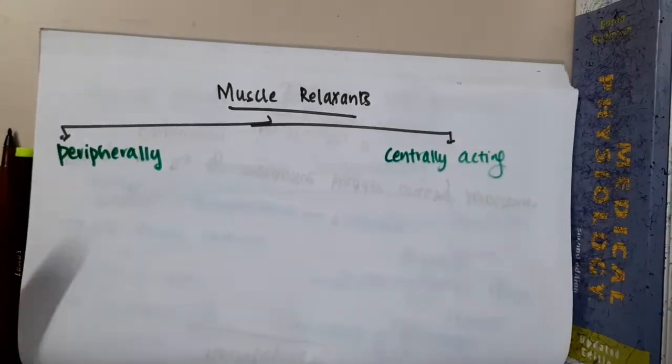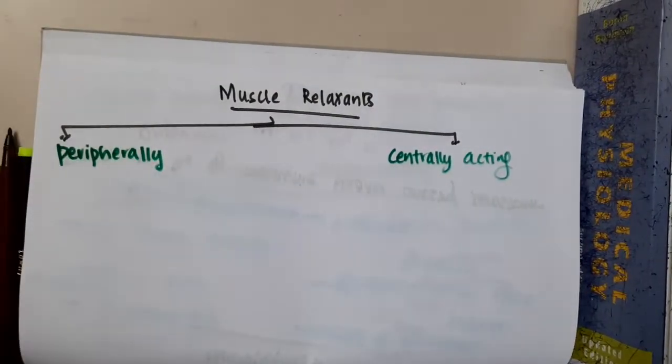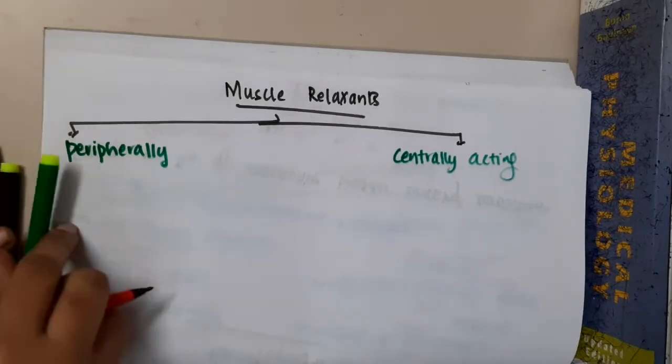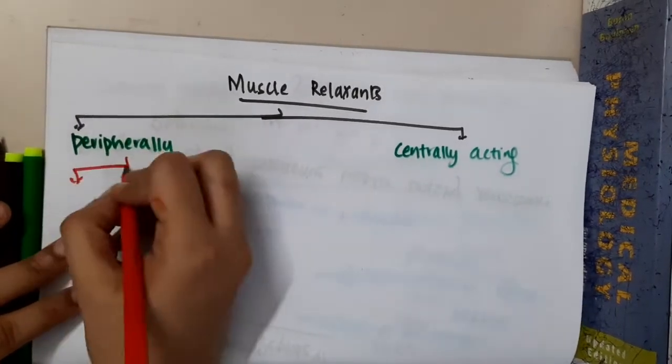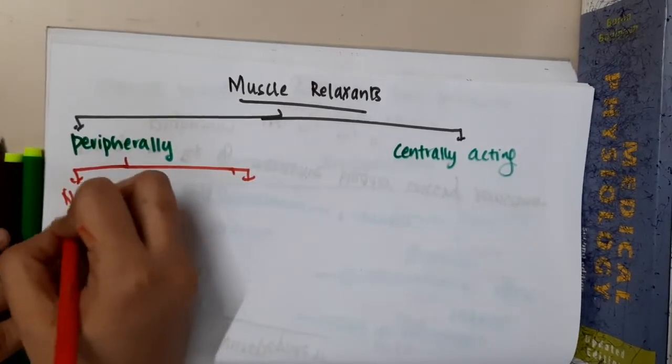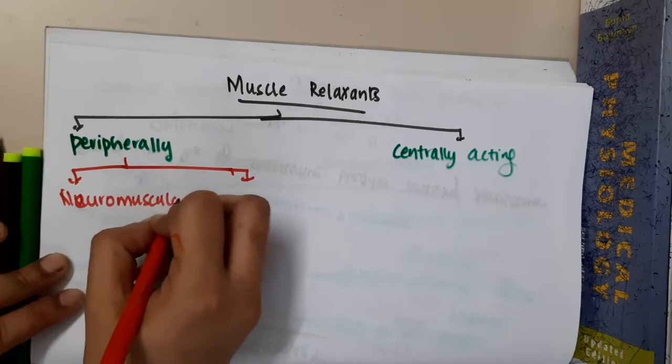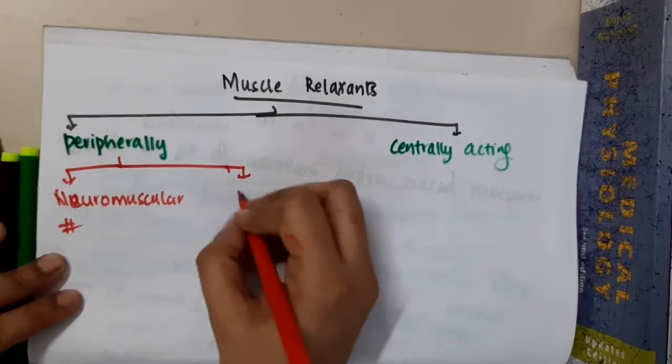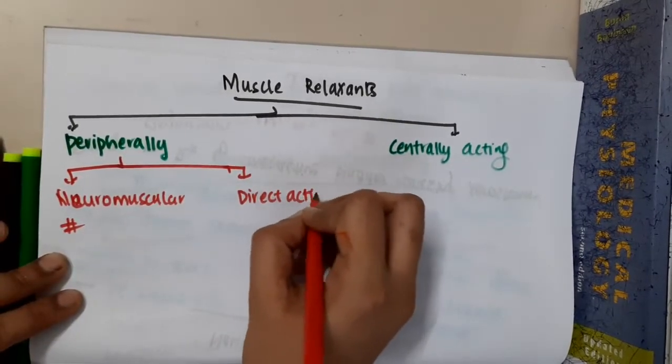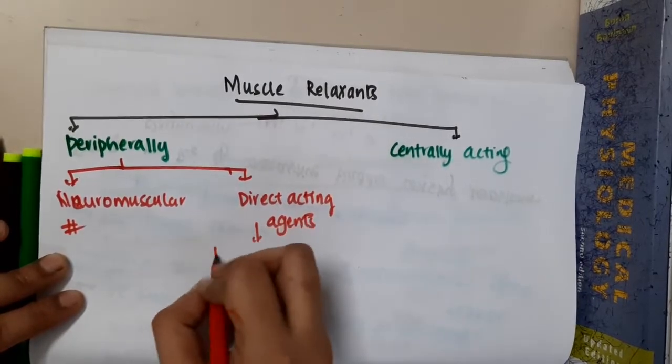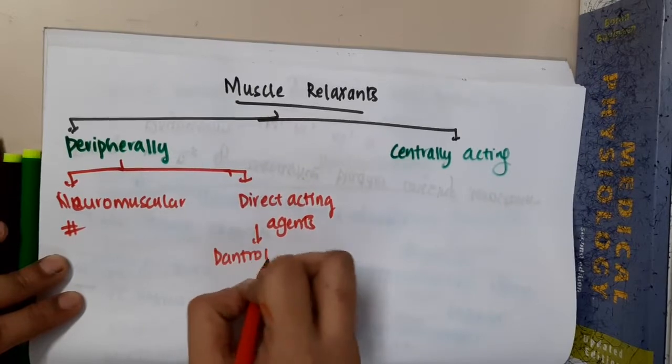In the peripherally acting muscle relaxants, we have two categories. One, we have neuromuscular blocking agents. Second, we have direct acting agents like dantrolene sodium, which is a direct acting peripherally acting muscle relaxant, and we have quinine.